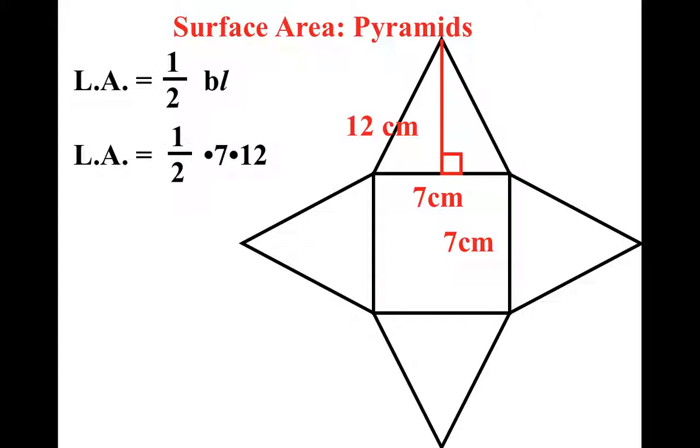Notice when I plug in the numbers, I get one-half times 7 times 12. But when I divide, I end up getting 6, and each lateral area is 42. Now if one lateral area is 42, I don't have to do the math for the rest. They're all 42. So I can just multiply 4 times 42, which gets me 168, is what the area of the lateral surface areas is.